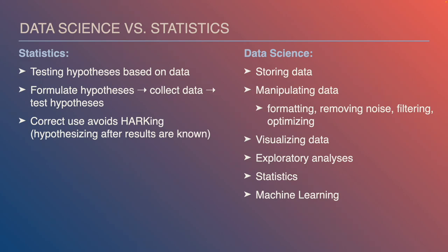Data science is a much bigger field that encompasses statistics as one step along the way, but it's focused more broadly on how do we store data, represent it, organize it, manipulate it, remove noise, filter it, optimize the data to identify particular features, and reduce extraneous noise, measurement error, things like that. How do we visualize the data? How do we explore and understand it? This gets into not just testing hypotheses, but really understanding what patterns are there and mining our data for information and insight.